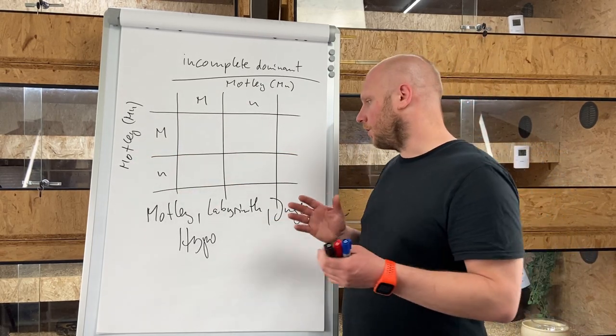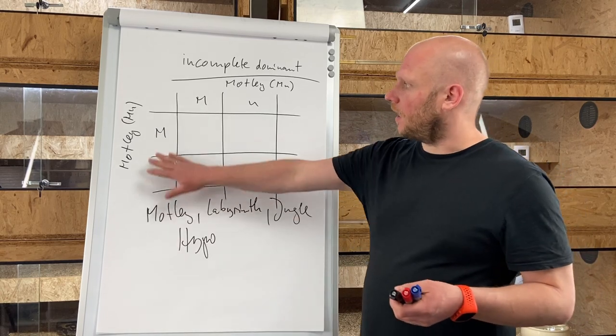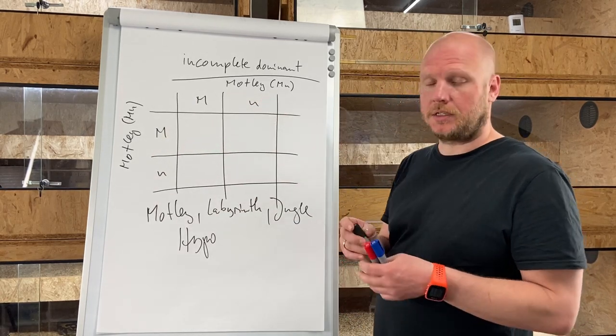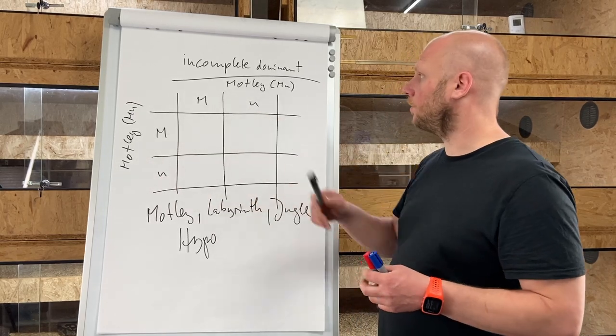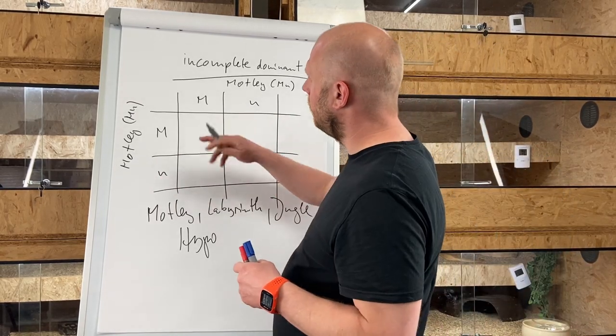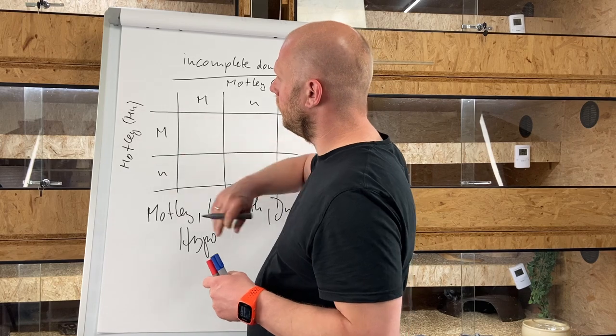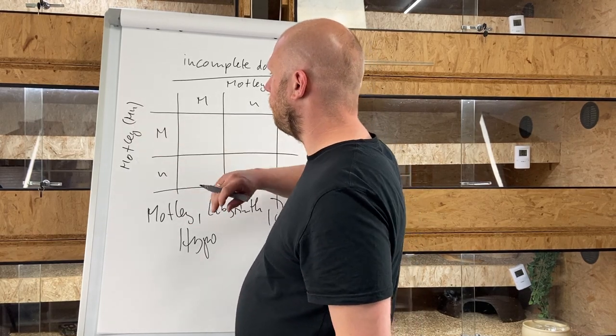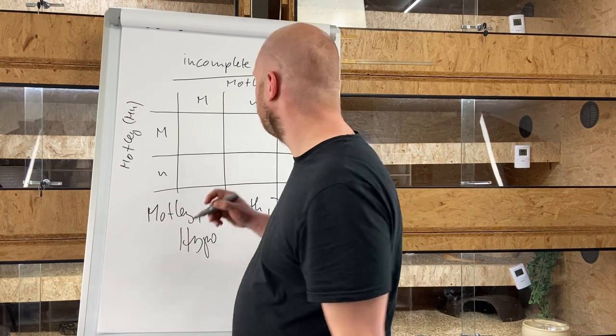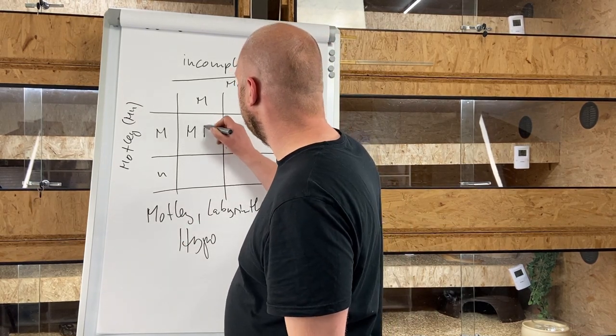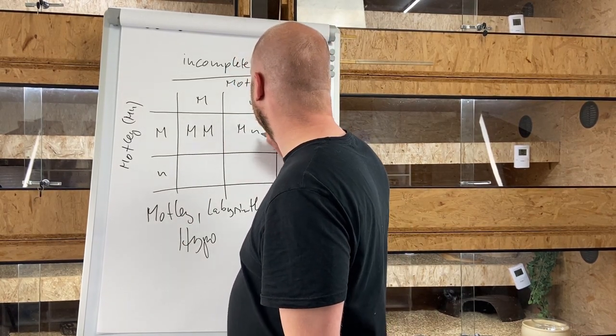For example, here I prepared the Punnett square and we want to breed a motley to motley. So the abbreviation is a big M for motley and an N for wild type, and we are multiplying every quarter.